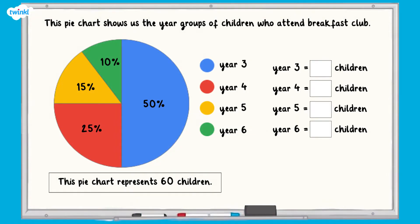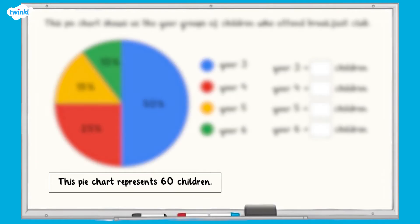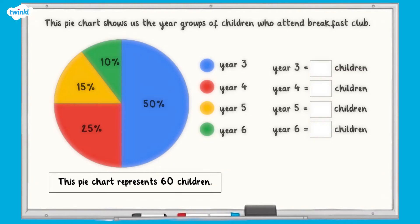Let's have a look at this pie chart which shows us the year groups of children who attend breakfast club. The pie chart represents 60 children. This pie chart doesn't tell us how many children are from each year group, but it does give us the percentages.